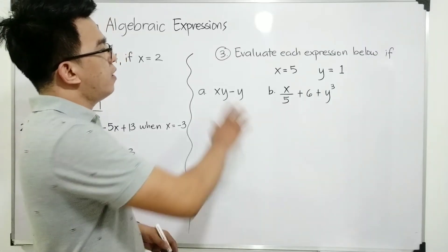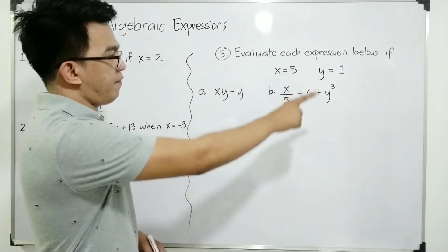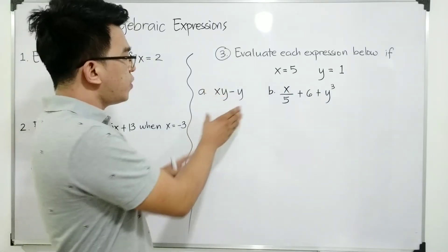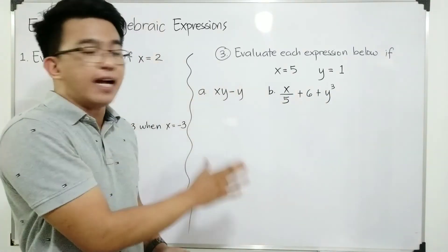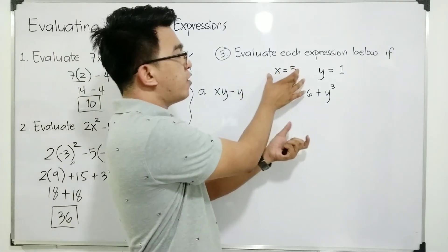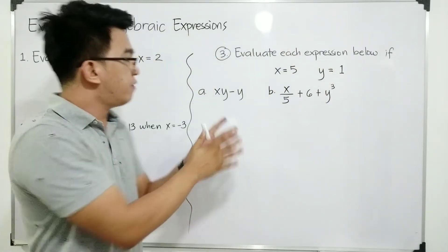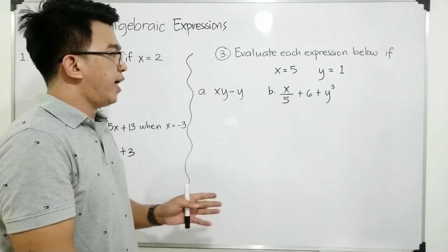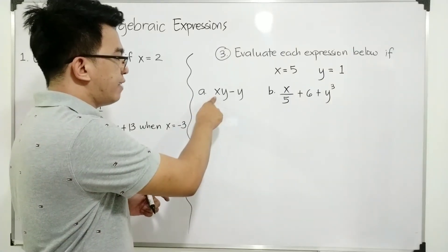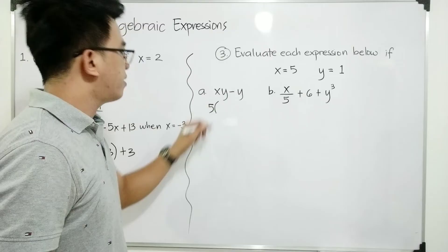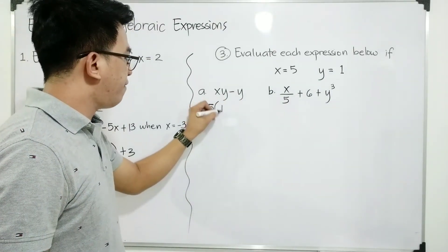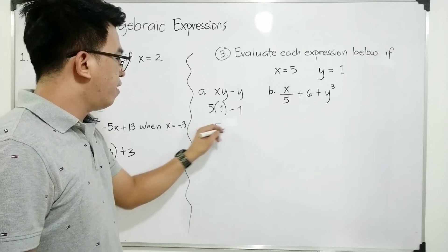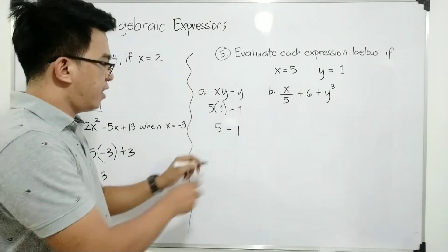Now let's move on with item number 3. Evaluate each expression below if x is equal to 5 and y is equal to 1. So we are given two different algebraic expressions, wherein we will be using the same value of x and y to evaluate them. For letter A, we are given the expression xy minus y. We replace x by 5, giving us 5 times y which is 1, minus your y which is 1. Simplifying: this gives you 5 minus 1, and 5 minus 1 — the answer is 4. This is the answer for letter A.